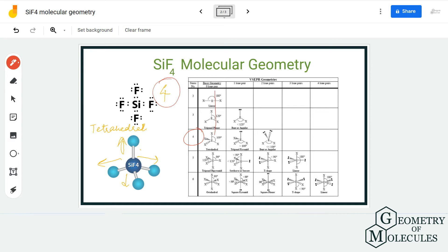lone pairs. So looking at this table, the molecules that have a steric number of four and have zero lone pairs have tetrahedral molecular geometry. Hence, the molecular geometry of SiF4 molecule is tetrahedral, and the bond angle is 109.5 degrees.